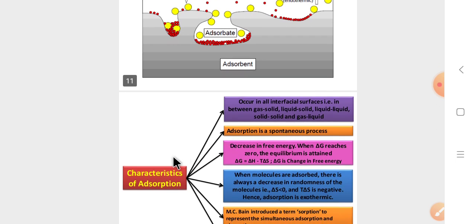Next, what are the characteristics of adsorption? Adsorption can occur in all interfacial surfaces. Yes, all interfacial surfaces. All the surfaces may exhibit adsorption, such as gas-solid, liquid-solid, liquid-liquid, and gas-liquid. These are the types of colloids depending on the physical properties.